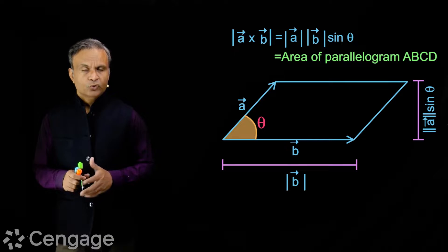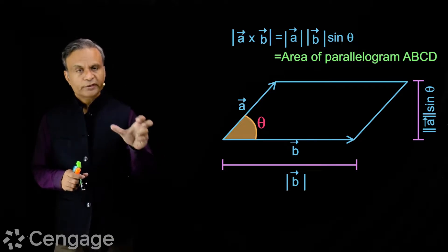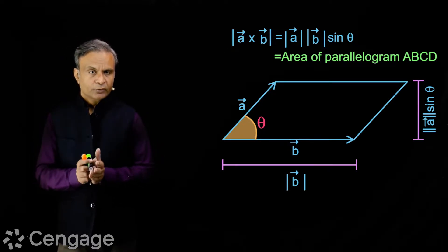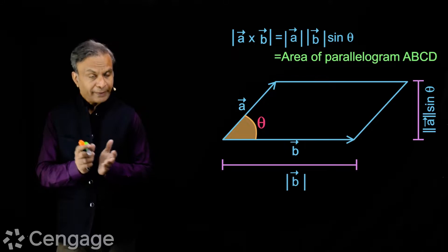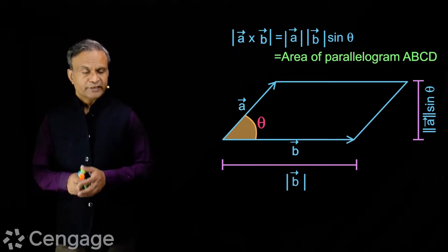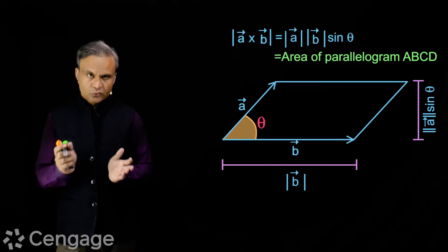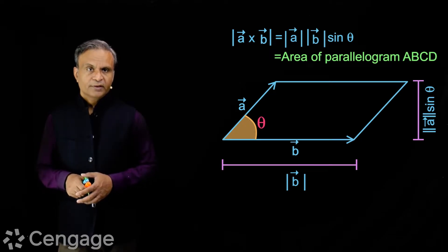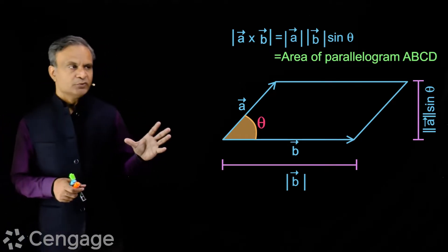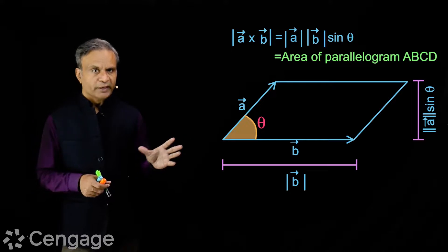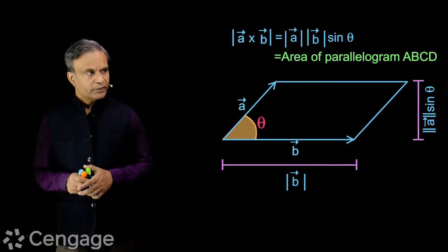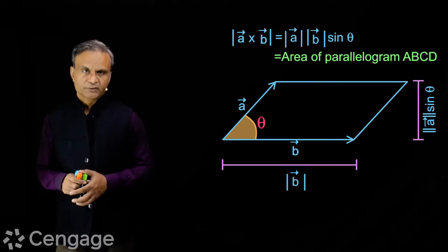Suppose two non-collinear vectors are given; then we can form one parallelogram using these two vectors whose adjacent sides are these two vectors. Then using cross product, we can find the area of this parallelogram. As shown in the figure, the area of this parallelogram will be the modulus of B cross C.